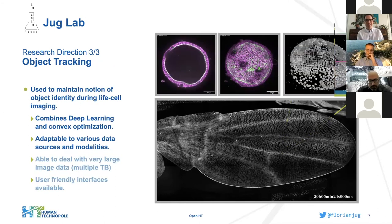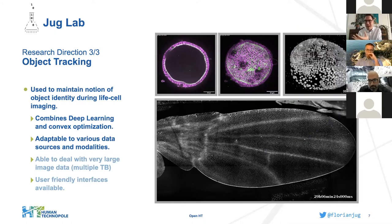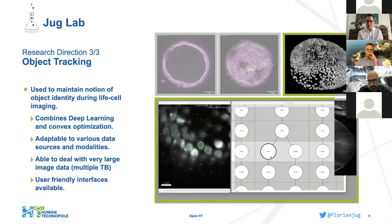The third research direction is object tracking. Once you have — for a single time point — a notion of what objects are contained, the next question is: if you have a movie of objects moving through your sample, how do these objects map from time point to time point? This is exactly what tracking addresses.